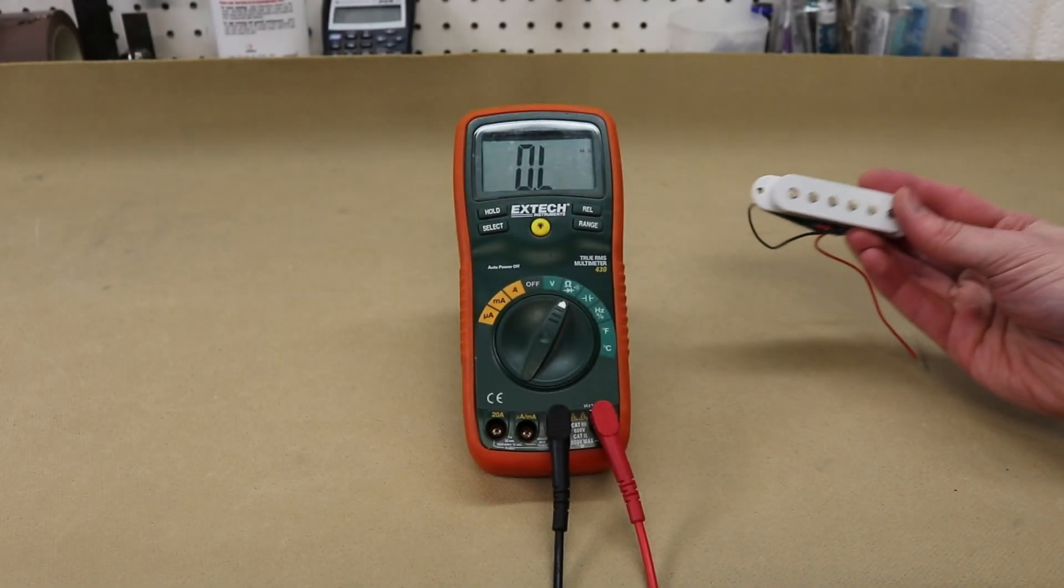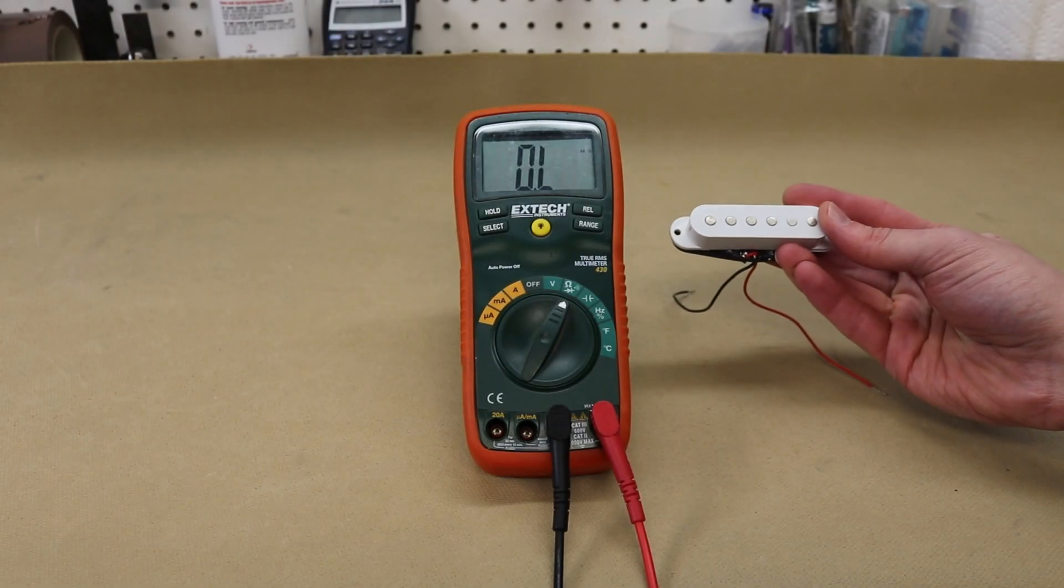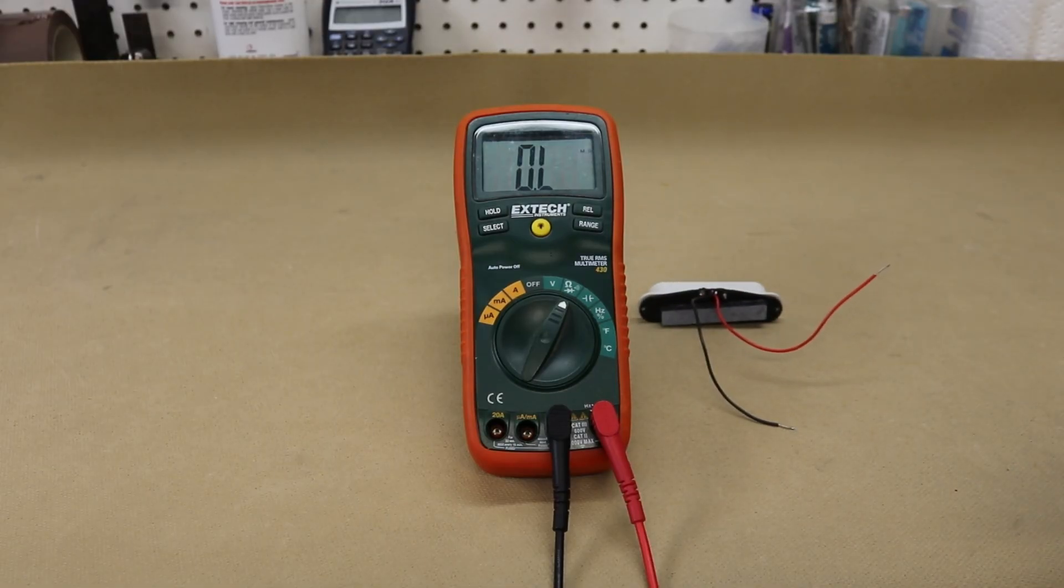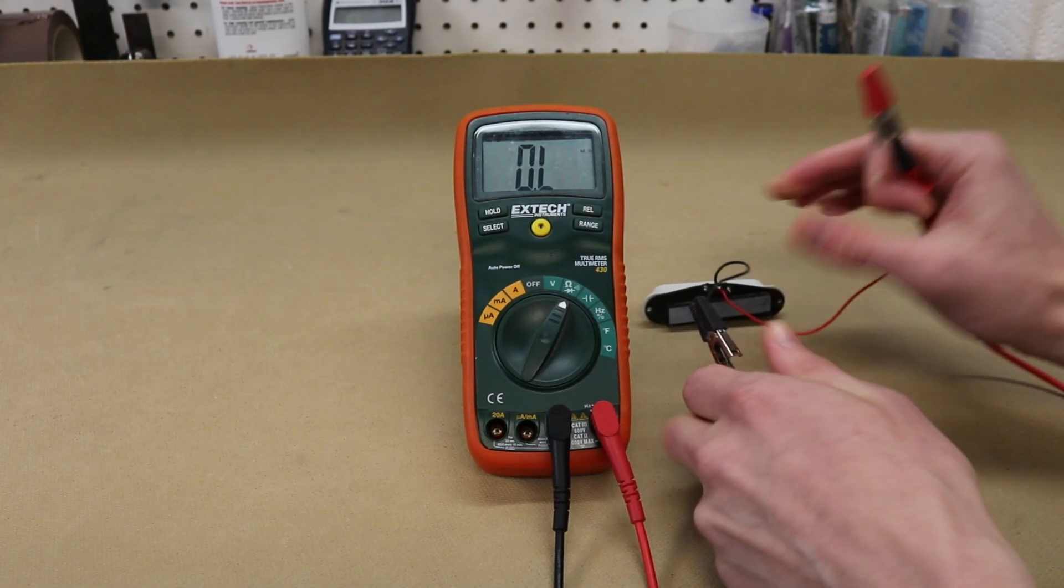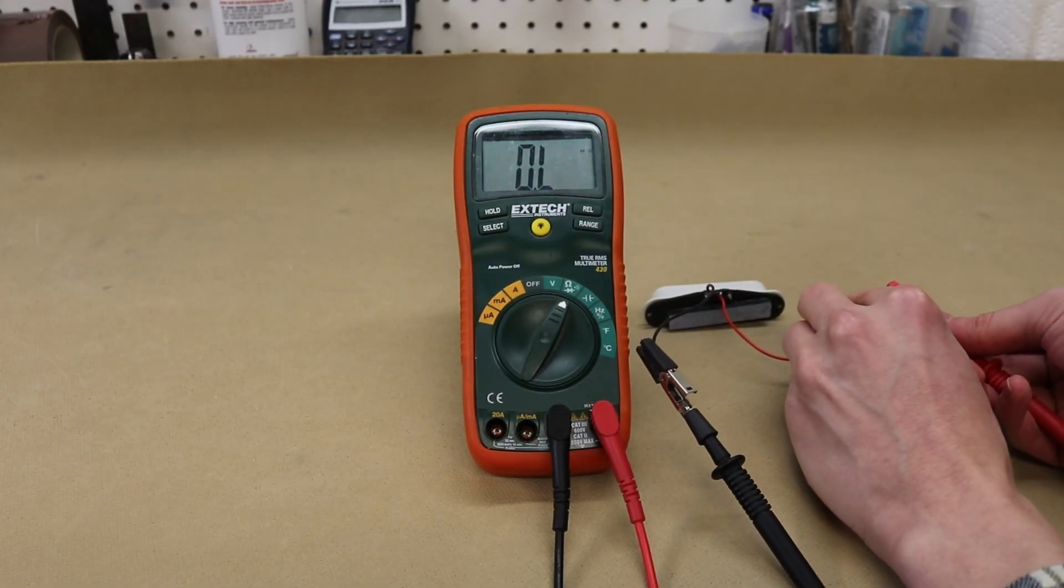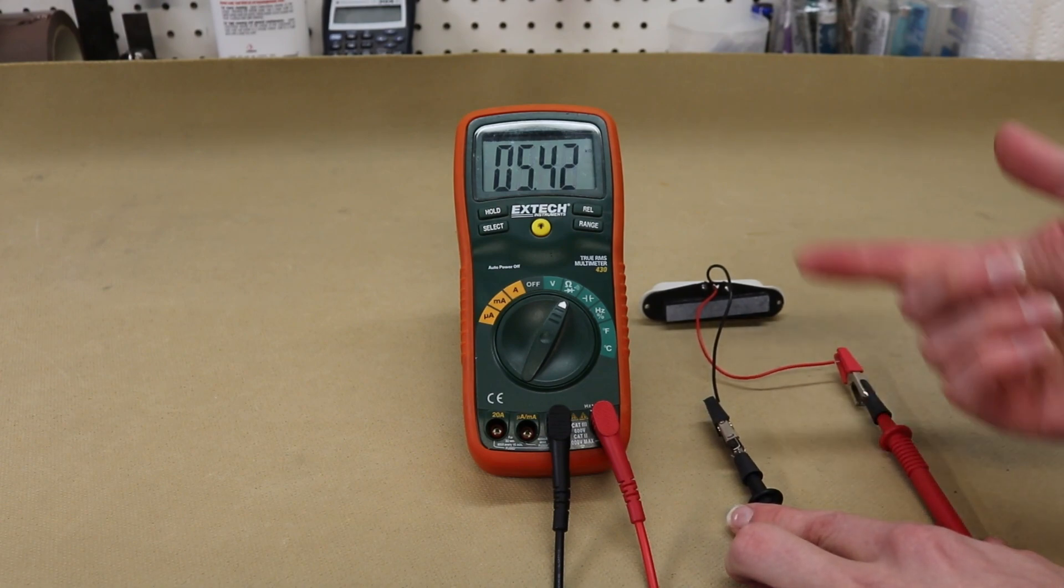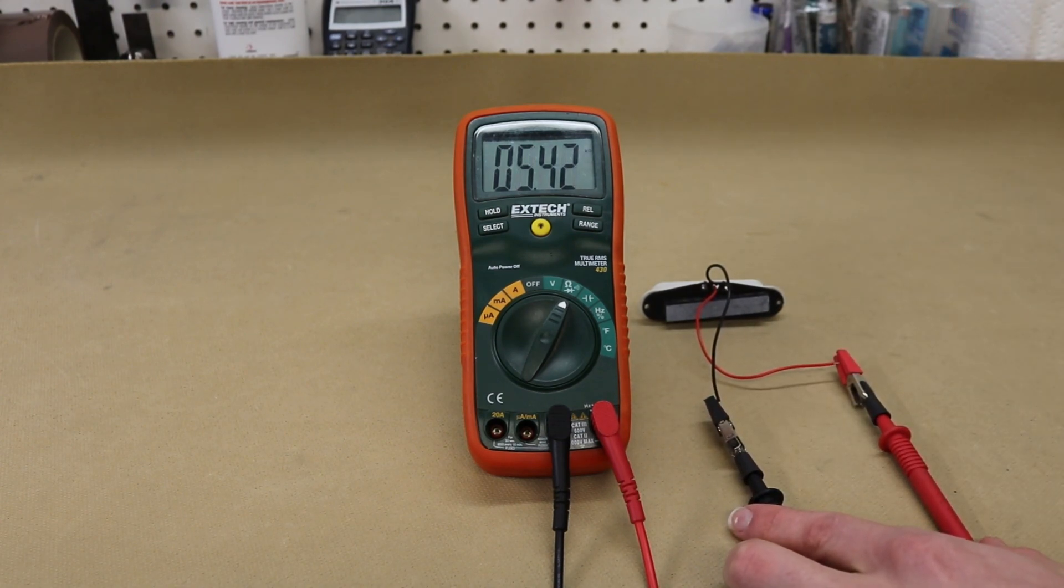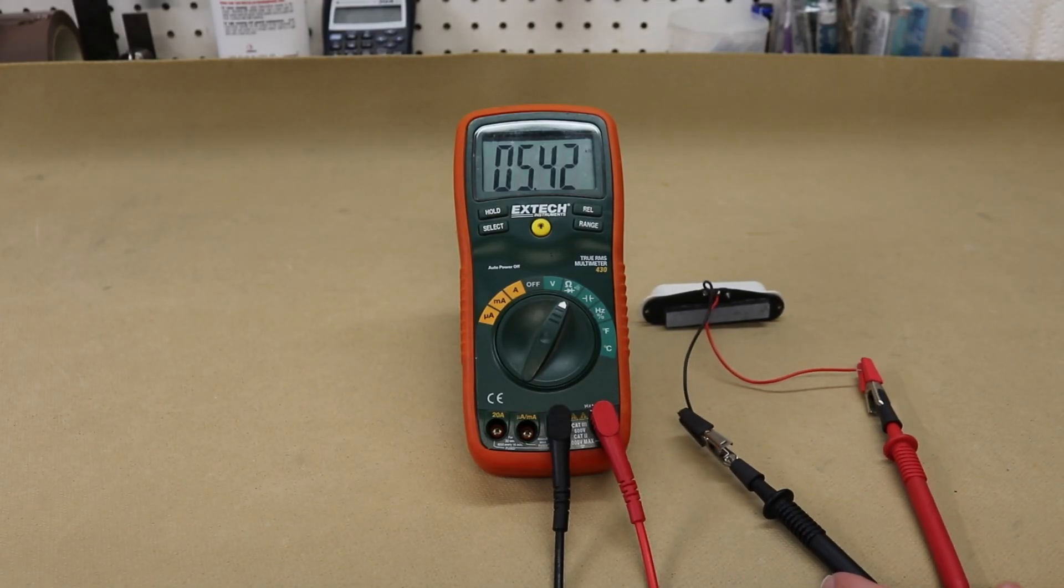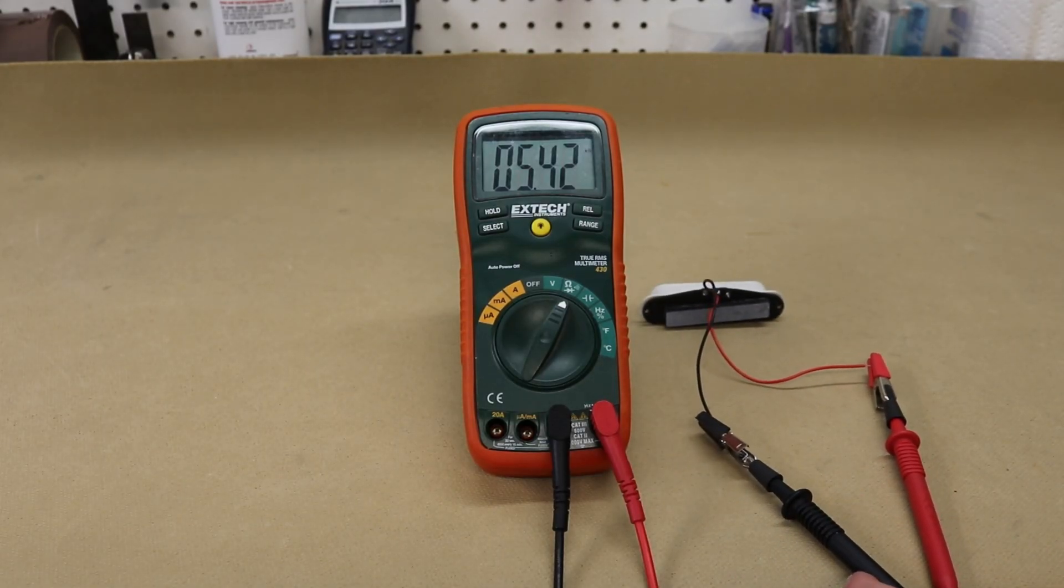The first pickup I'm going to measure is the Stratocaster single coil pickup. I'll take the black probe, connect it to black, take the red probe and connect it to red, and in this case you'll see a DC resistance of 5.4k ohms. Typically on a Strat pickup you'll see a measurement close to 6k ohms.